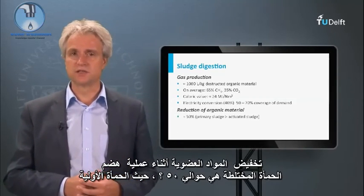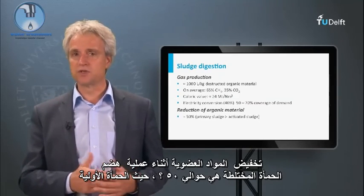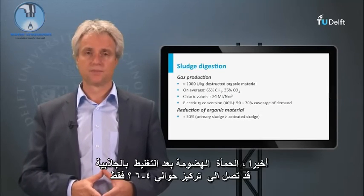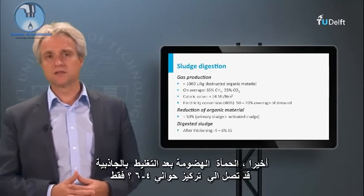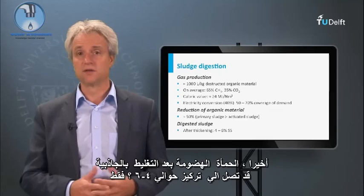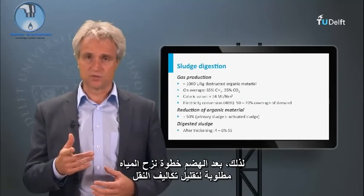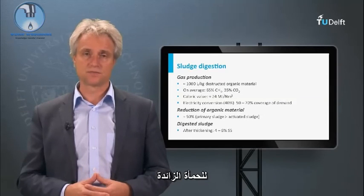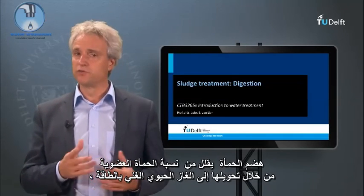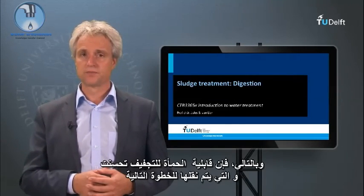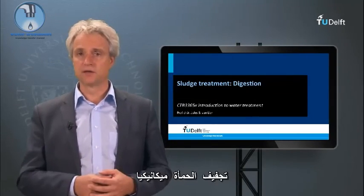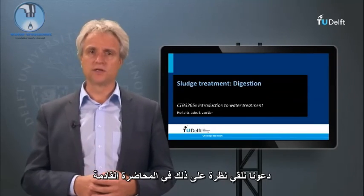The reduction of organic matter during the digestion of mixed sludge is about 50%, in which primary sludge is much better degraded than secondary sludge from the aeration tanks. Digested sludge after gravity thickening may reach a concentration of about 4–6%. Therefore, after digestion, a dewatering step is required to minimize transport cost of the excess sludge. Sludge digestion reduces the sludge organic fraction by converting it into energy-rich biogas; consequently, the sludge dewaterability is improved, which is important for the next step: mechanical sludge dewatering. Let's have a look at this in the next lecture.